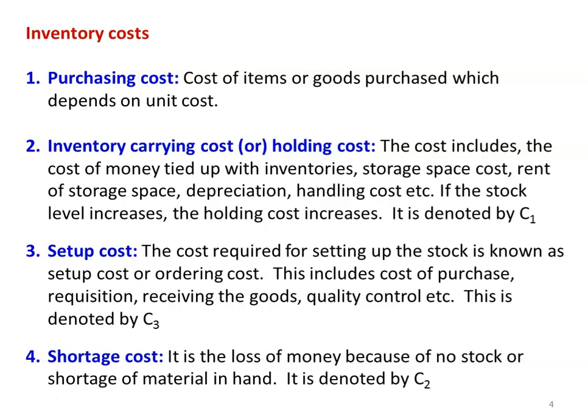Third is setup cost: the cost required for setting up the stock, also known as ordering cost. This includes transportation cost, requisition cost, receiving goods, and quality control — everything from placing the order to receiving and placing items in the storage area. This is denoted by C3. Fourth is shortage cost, denoted by C2: the loss of money due to no stock or shortage of material, causing loss of profit.